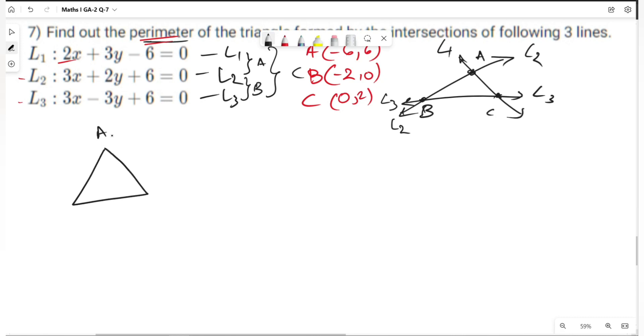Now we have a triangle with point A at (minus 6, 6), point B at (minus 2, 0), and point C at (0, 2).